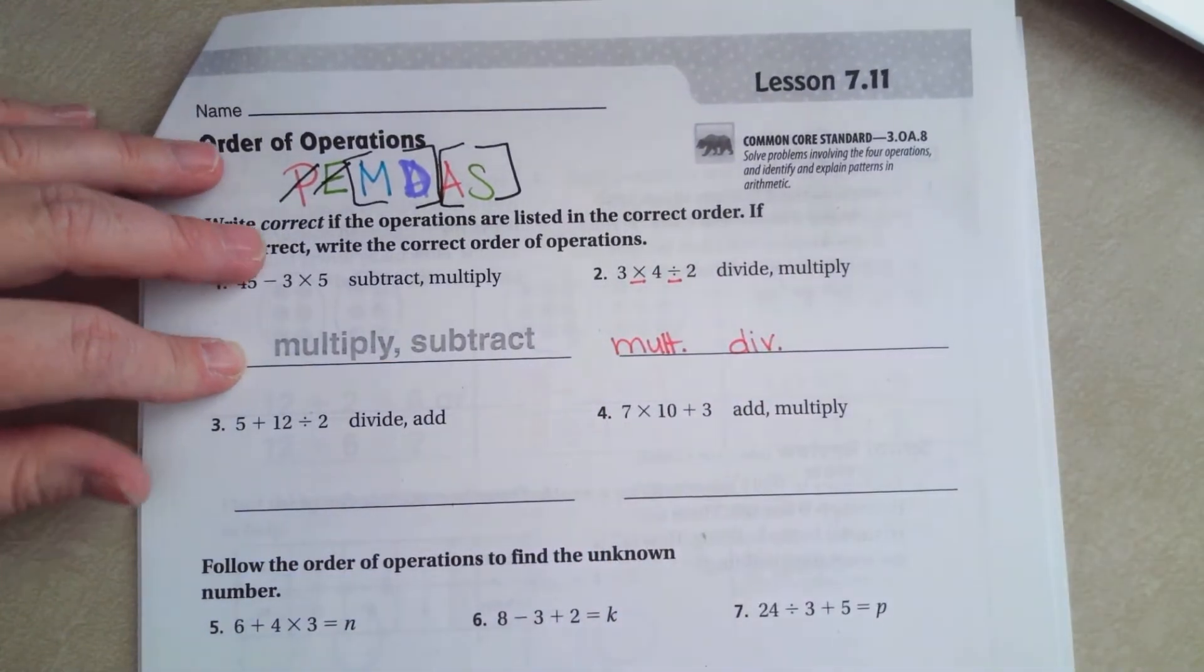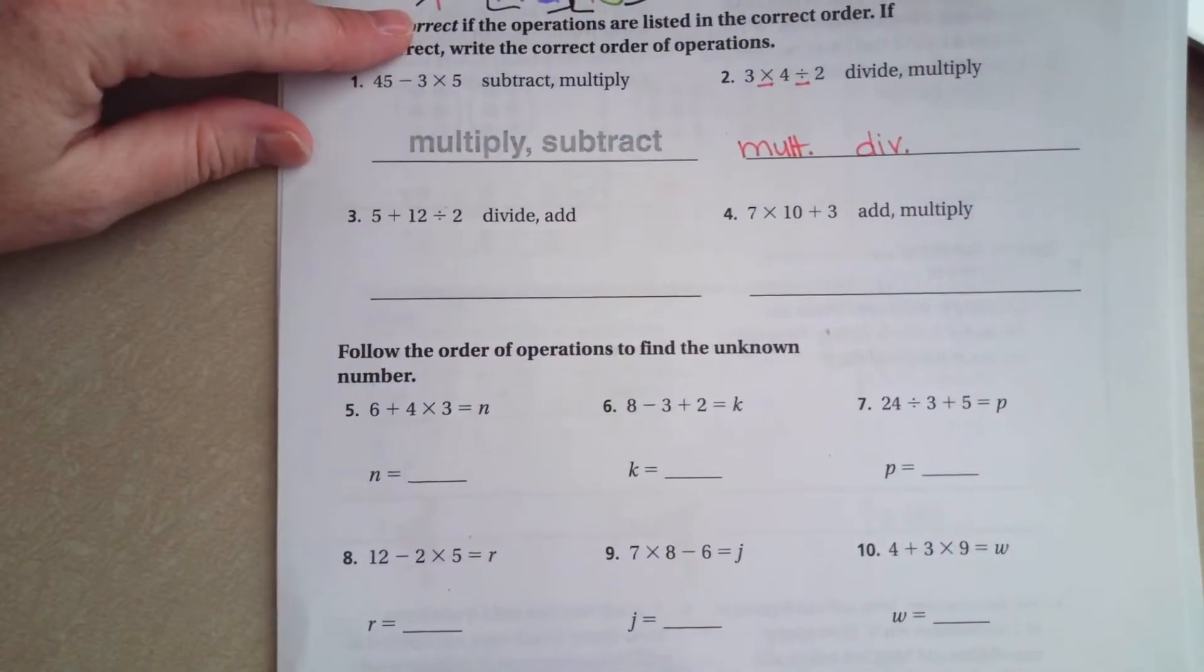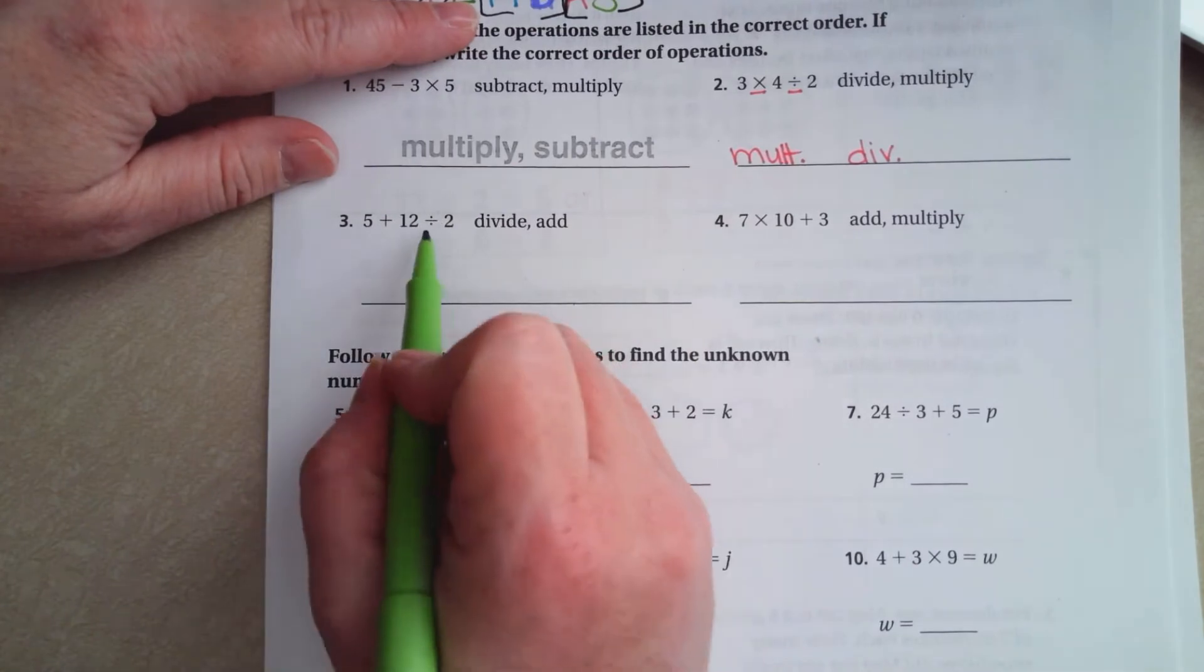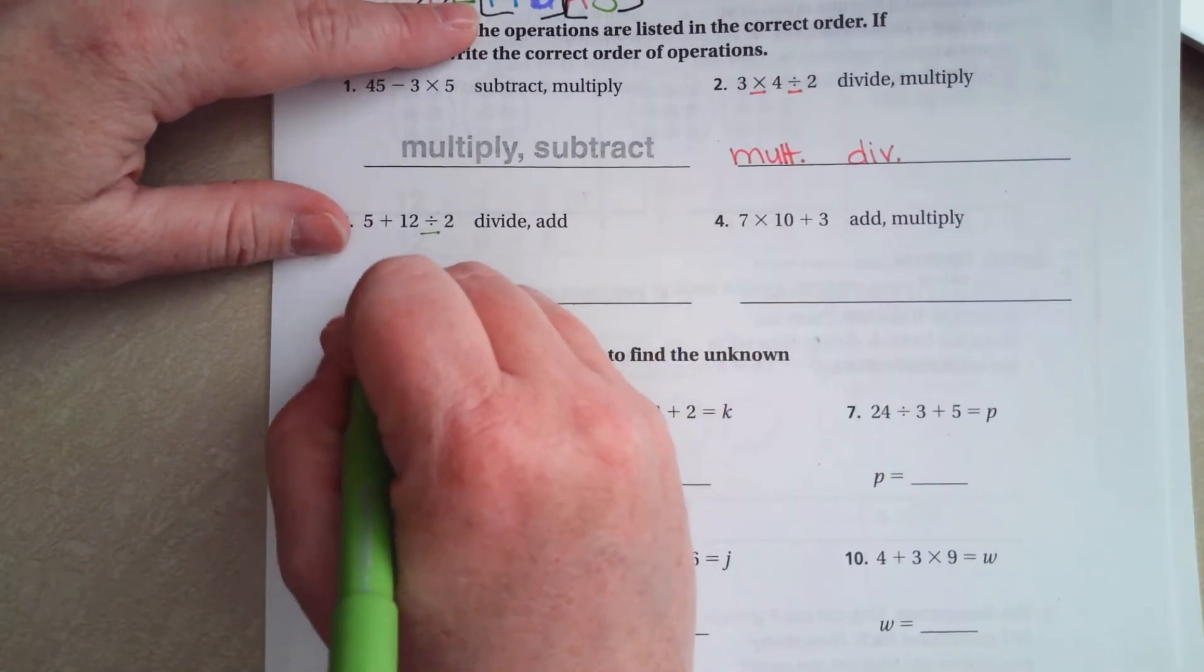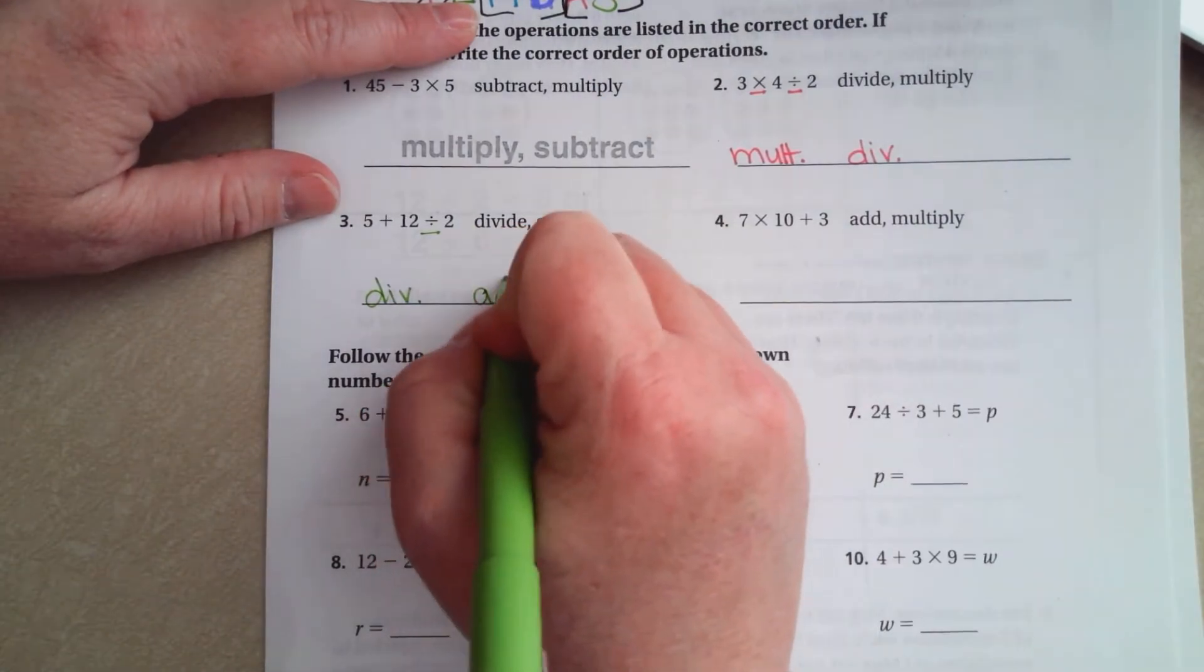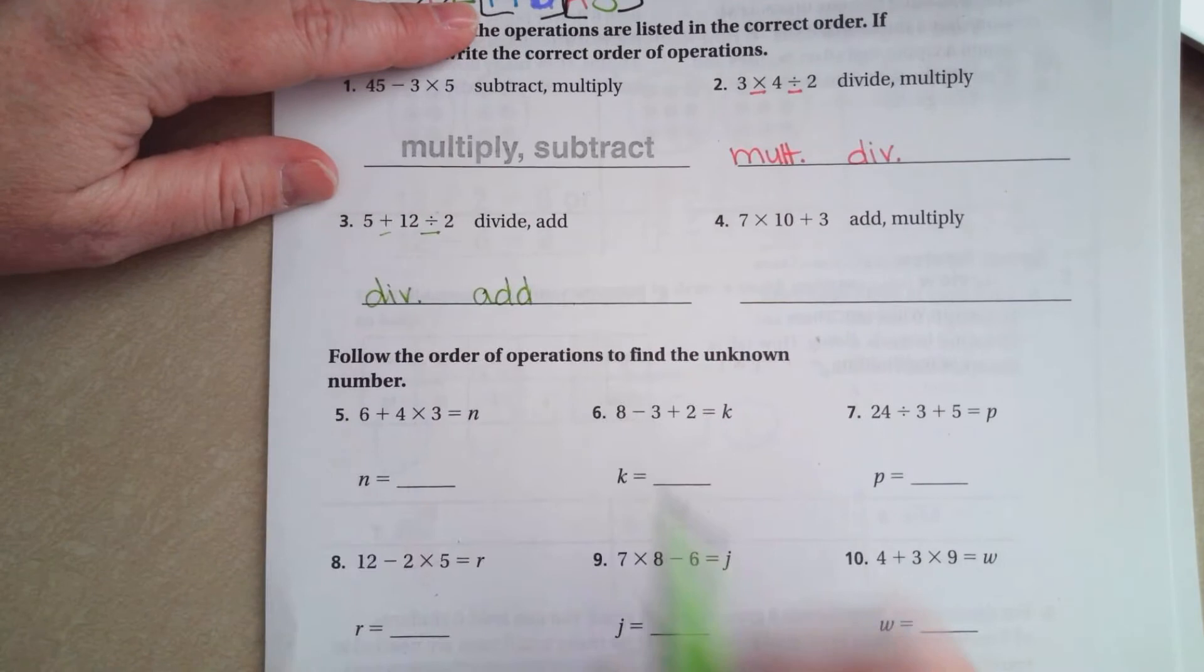On this one we still have to go in order here so we have to do multiplication or division first and there's division right there. So we would have to divide then we have to add. Adding comes second.